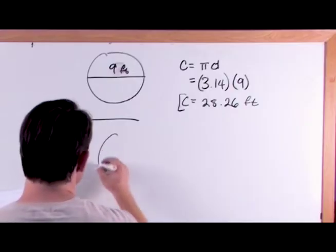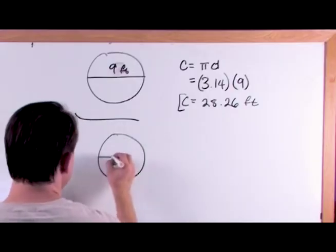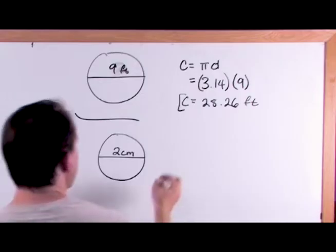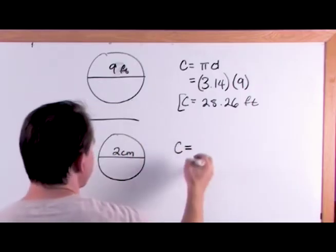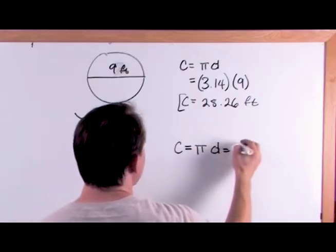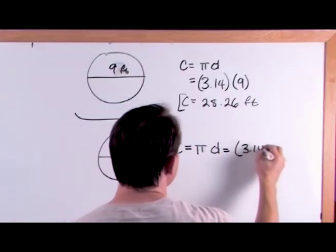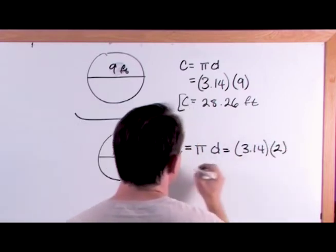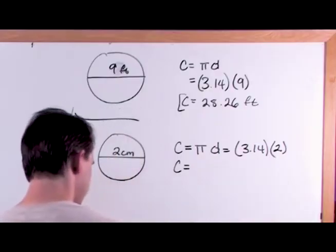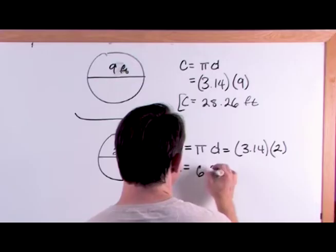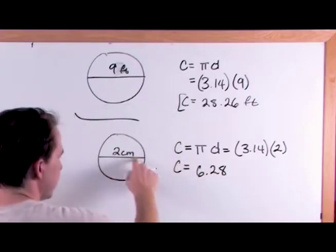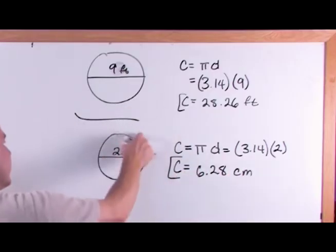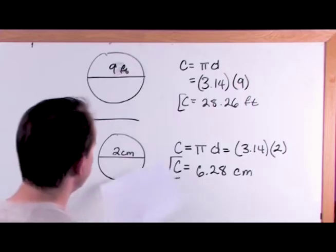Now let's say we had another circle with a diameter of 2 centimeters. Then the circumference would be pi times the diameter, which is 3.14 times 2, so the circumference is 6.28 centimeters. That's the distance all the way around the circle.